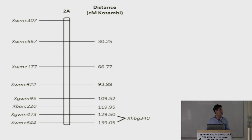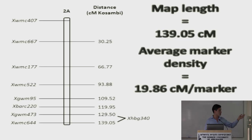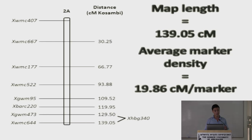This is the skeleton map we created. It consists of 139 centimorgans in length, with an average density of 19.86 centimorgans per marker. It was built with just eight microsatellite markers, which is quite notable — most of the time more markers are required to have a stable map, but we achieved a stable one with only eight.